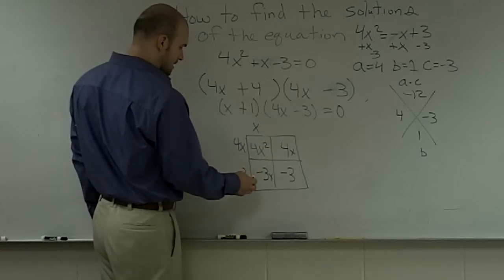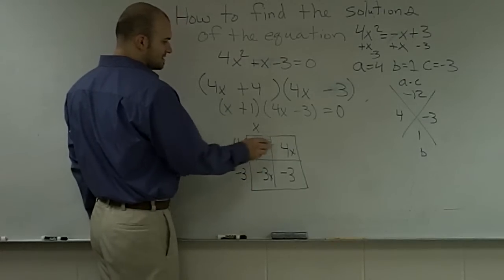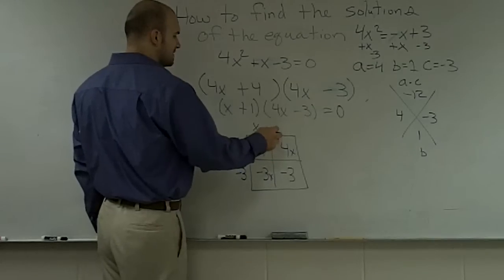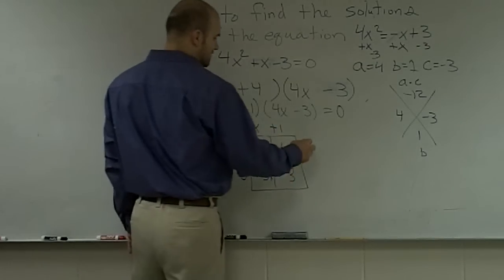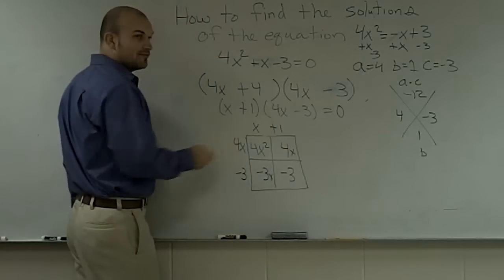4x times what gives you 4x? And that would be plus 1. So, therefore, my factors are now x plus 1 and 4x minus 3.